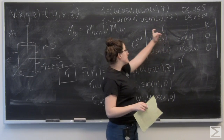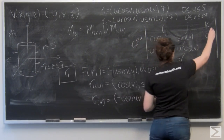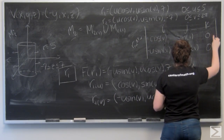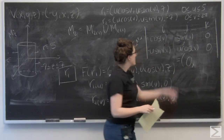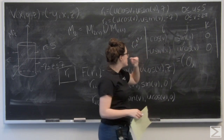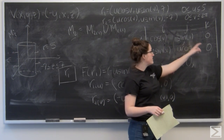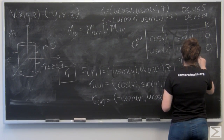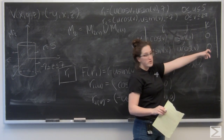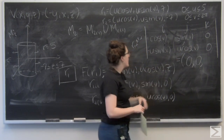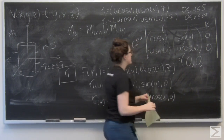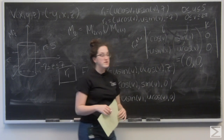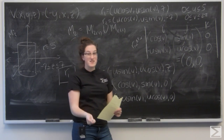For the I component, cutting the top row and the I column, the determinant is zero because I have a zero column. For J, the two by two matrix is cosine V, 0 / negative U sine V, 0 — again zero because of the zero row. For K, cutting that column, on the main diagonal I get U cosine² V, and subtracting negative U sine² V, using the trig identity this equals U. So R_U cross R_V = (0, 0, U).